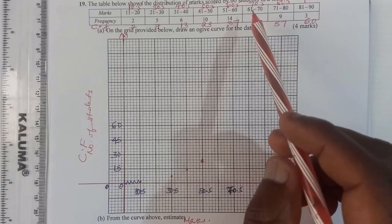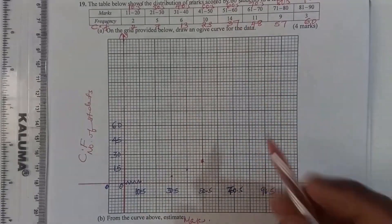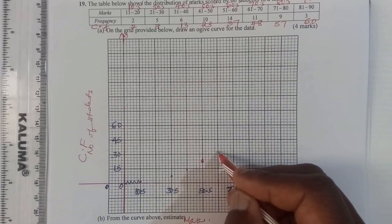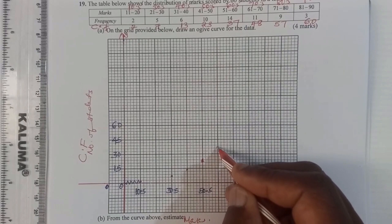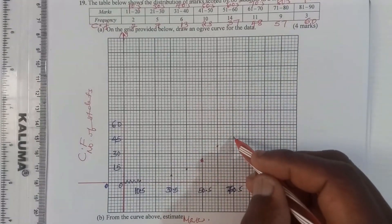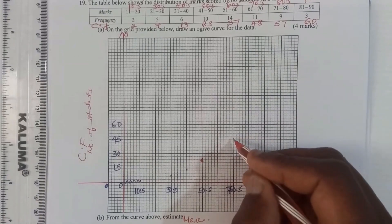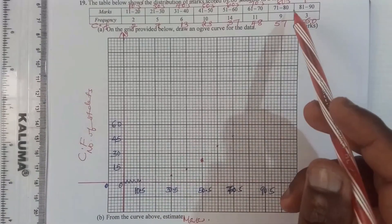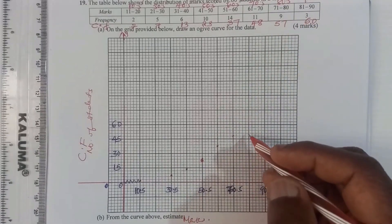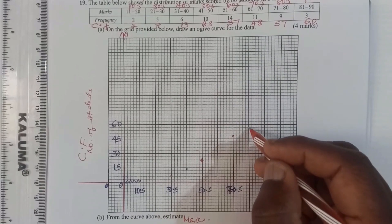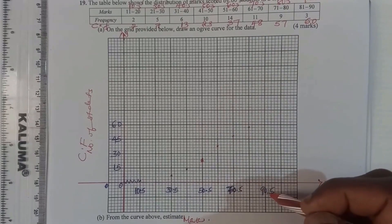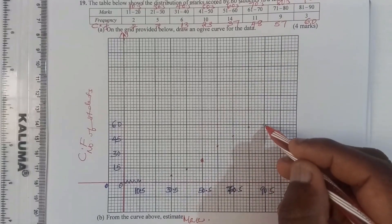Then (60.5, 37) — 60.5 is here, counting 33, 36, so 37 is here. Then (70.5, 48) — 48 is here, 45 then 48. Then (80.5, 57) — 80.5 is here, 57 is here. Then the last point (90.5, 60) — 90.5 is here, 60 is here. So we've plotted all the points.